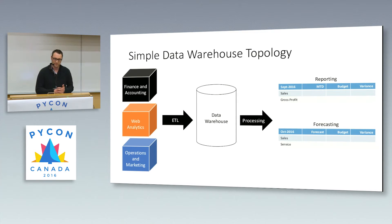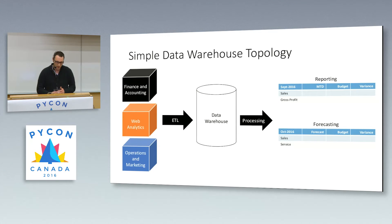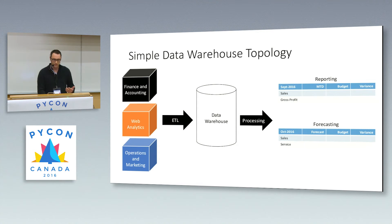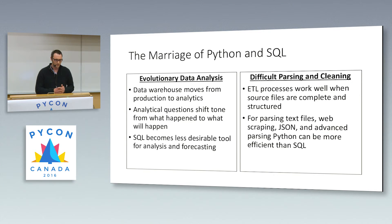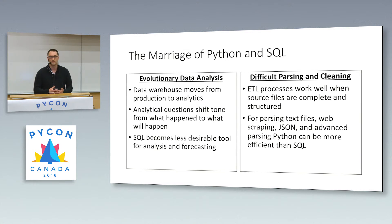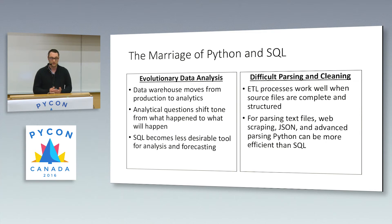We ran into several use cases where we wanted to use Python more within both our ETL and our processing and forecasting. So we started installing Anaconda across our servers and local desktops and using Python within our workflows. The use cases for Python in a data warehousing environment are typically when you want more forecasting, predictive modeling, and other analytical questions — really understanding where you're going and why things happen the way they did.